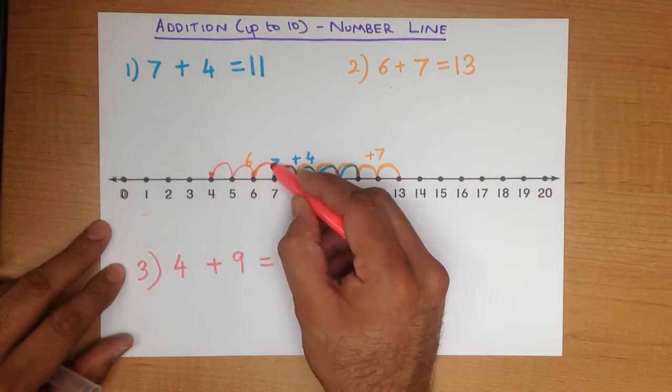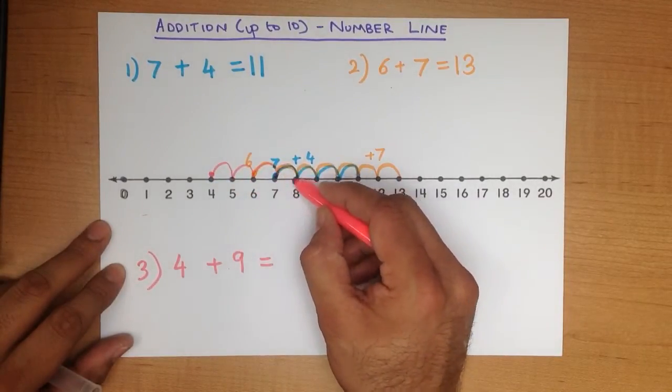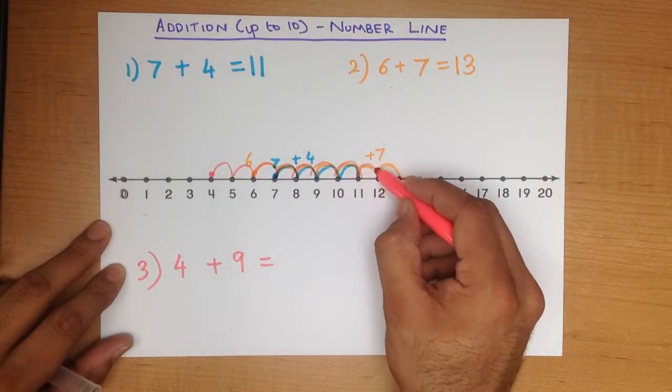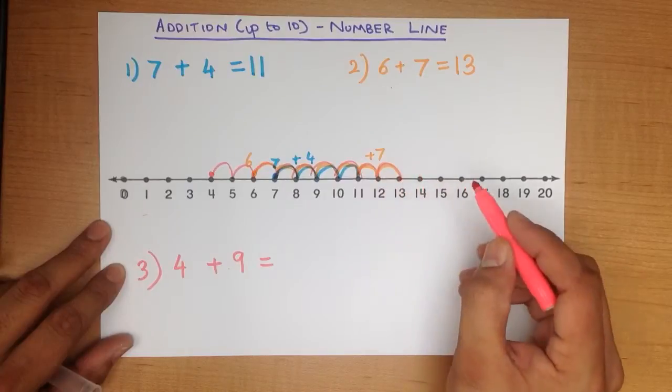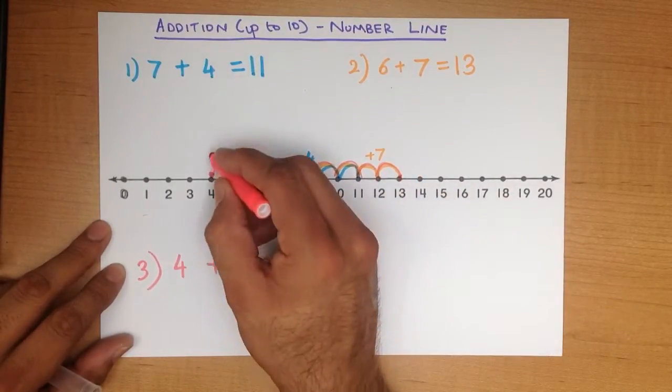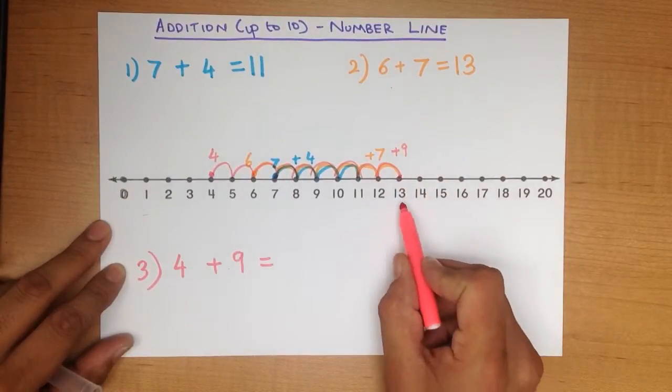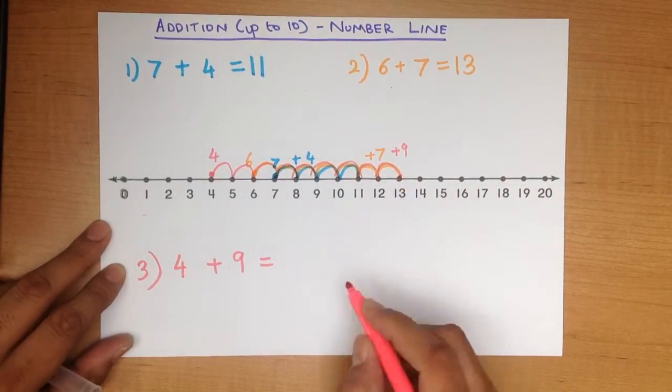1, 2, 3, 4, 5, 6, 7, 8, 9. We finish here. Started at 4 plus 9. What number did we finish on? It's 13.